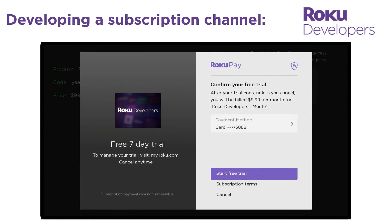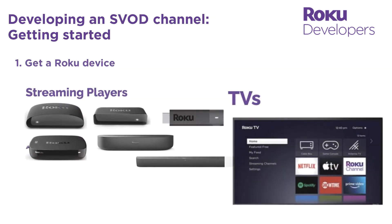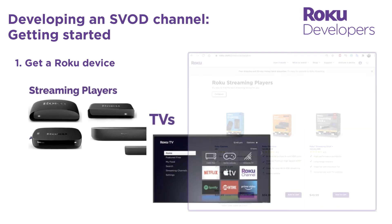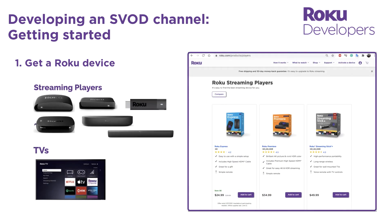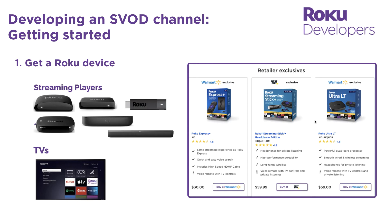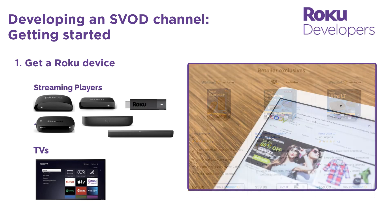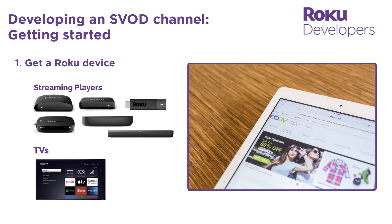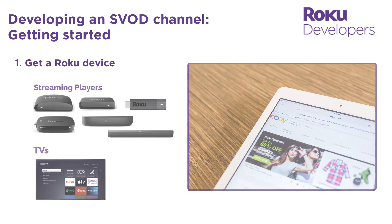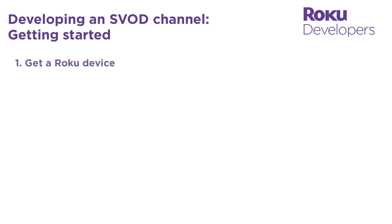Now that you understand the basics of a subscription channel, here's how to get started building one. First, you need to have a Roku device. You can get one from Roku.com or your local electronics retailer. You can also get one from a secondhand marketplace — just check the Roku hardware spec first to make sure it's on the list of currently supported devices.